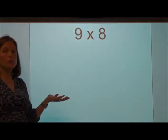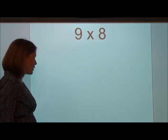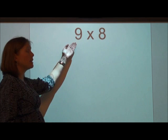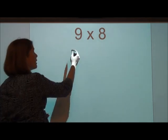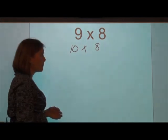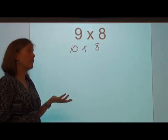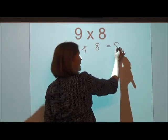We have 9 groups of 8, which can be pretty tricky for us to multiply. So let's change that. Since 9 is really close to 10, let's make it 10 groups of 8. We can easily multiply 10 times 8. That's going to give us the product of 80.